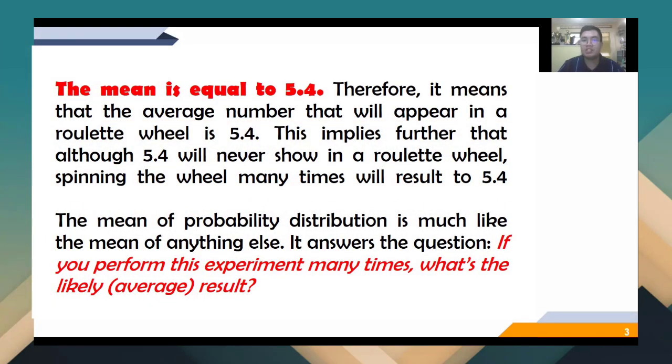So the mean is equal to 5.4. Therefore, it means that the average number that will appear in a roulette wheel is 5.4. And this implies further that although 5.4 will never show in a roulette wheel, spinning the wheel many times will result to 5.4. So this is how we interpret the data. The mean of probability distribution answers the question, if you perform this experiment many times, what's the likely average, or what's the likely outcome, or what's the likely result of that experiment?